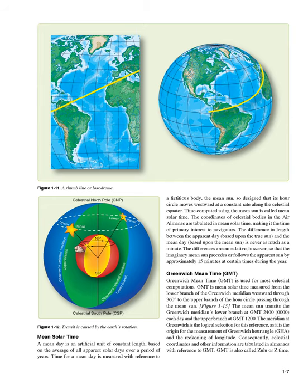Greenwich Mean Time (GMT) is used for most celestial computations. GMT is mean solar time measured from the lower branch of the Greenwich meridian westward through 360 degrees to the upper branch of the hour circle passing through the mean sun. The mean sun transits the Greenwich meridian's lower branch at GMT 2400/0000 each day and the upper branch at GMT 1200. The Greenwich meridian is the logical selection for this reference, as it is the origin for the measurement of Greenwich Hour Angle (GHA) and the reckoning of longitude. Celestial coordinates and other information are tabulated in almanacs with reference to GMT. GMT is also called Zulu or Z time.